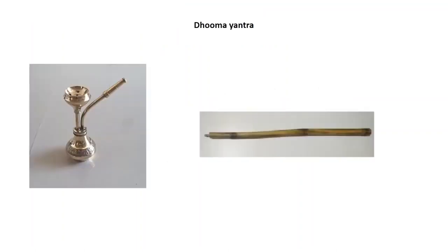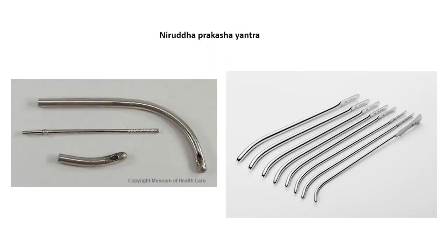Another unique instrument used in Shalakya practice was the dhumapana. It is described as a tubular structure, a tube that is 32 angulas long, and medicines are applied and then smoked. The length of the smoking tube for regular smoking conventions is 32 angulas. The frequency of duma use is less common now, but the present instrument used for this purpose is a modification of the same.